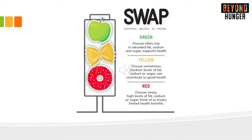We can categorize food as either green, yellow, or red. Green foods are low in saturated fat, sodium, and sugar. Yellow foods have medium levels of fat, sodium, or sugar. And red foods have high levels of fat, sodium, or sugar.